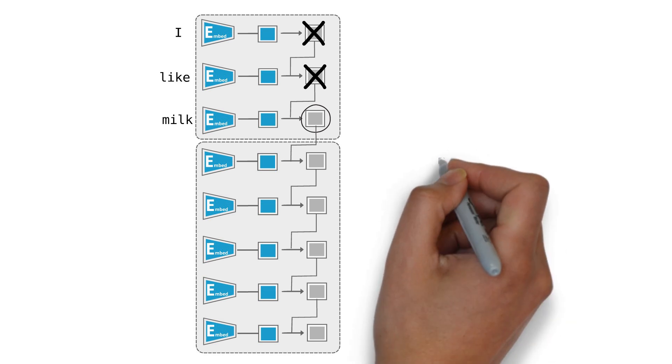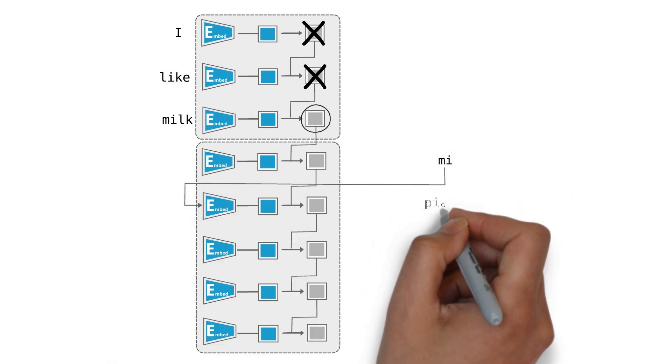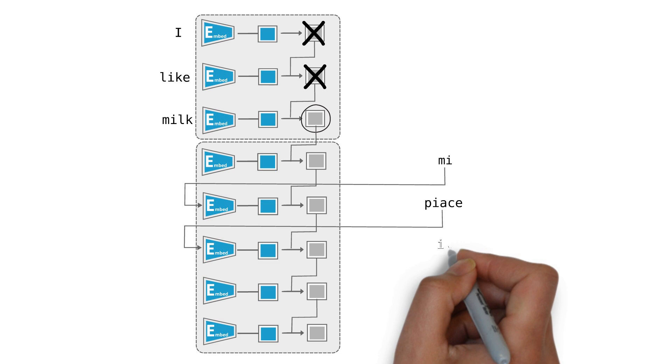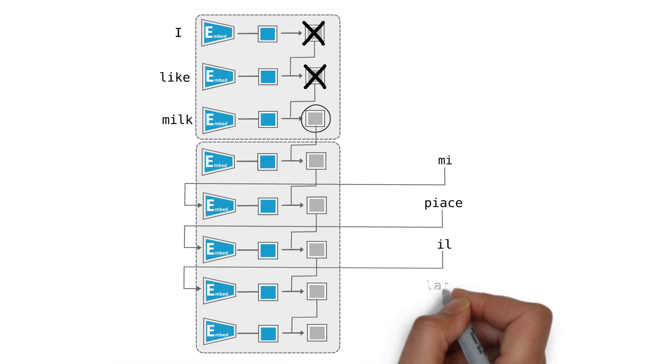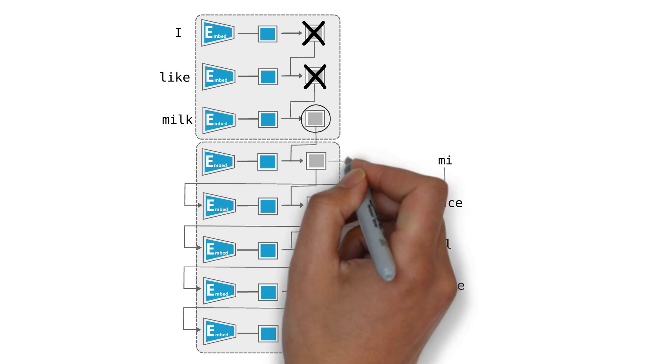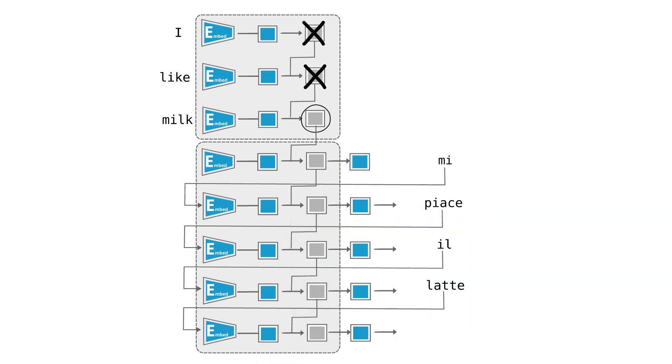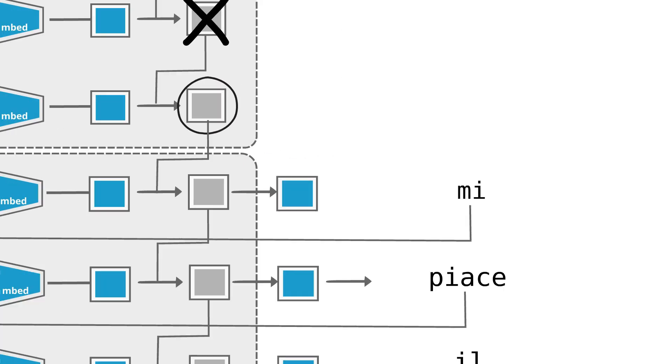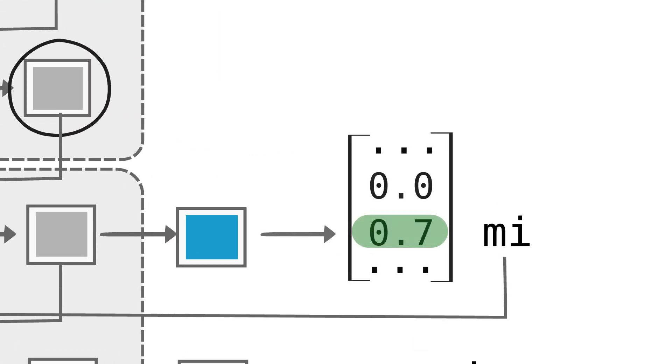The decoder works in the same way as a regular language model, predicting the Italian translation one word at a time. As for our basic language model, the decoder typically has a linear layer at the end, which outputs the logits, which give us the probability distribution across the Italian vocabulary of the next word.